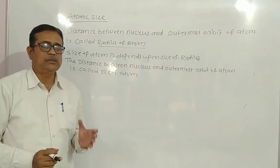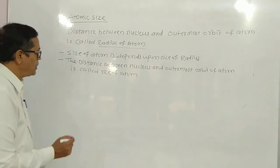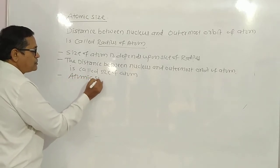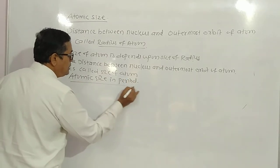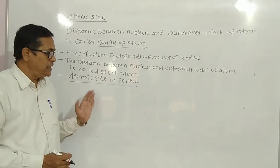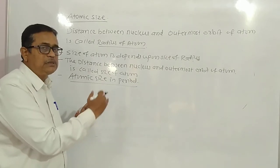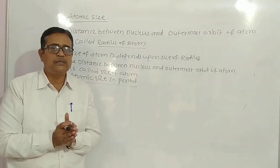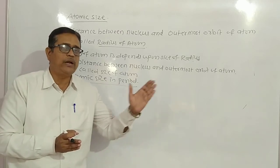Now we will discuss the size of atom in a period and the size of atom in a group. First, let us discuss atomic size in a period. One important point: the size of atom decreases from left to right in a period. Let us understand why this happens.